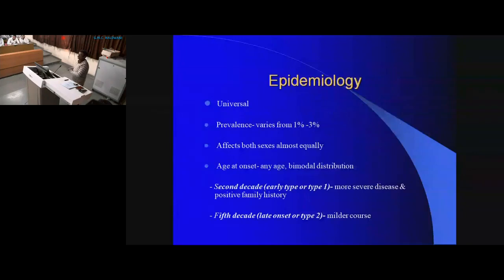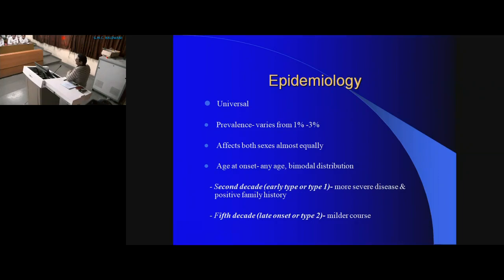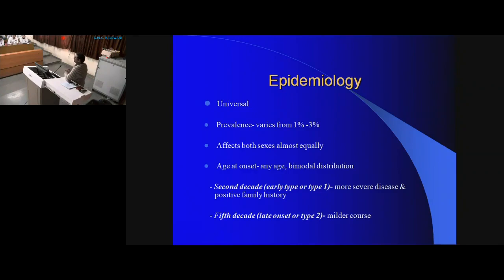Psoriasis is a universal disease with a prevalence of around 1 to 3%. It affects both sexes almost equally. It has a bimodal age of onset. Type 1 psoriasis usually develops in the second decade of life and is usually more severe compared to type 2 psoriasis, with more genetic linkages. Type 2 or late-onset psoriasis usually develops in the fifth decade of life.